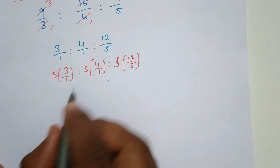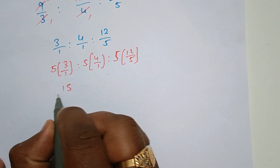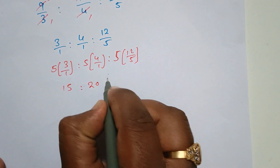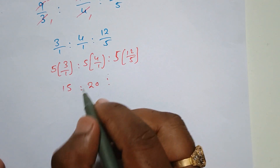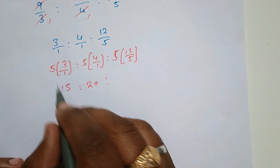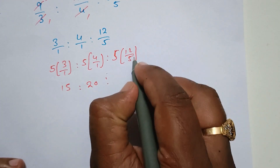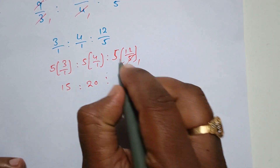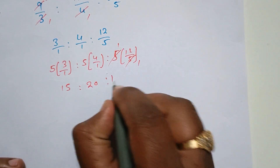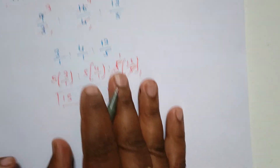So, 5 into 3 is 15. 5 into 4 is 20. 5 into 12 by 5 is 12. So the answer is: 15 is to 20 is to 12.